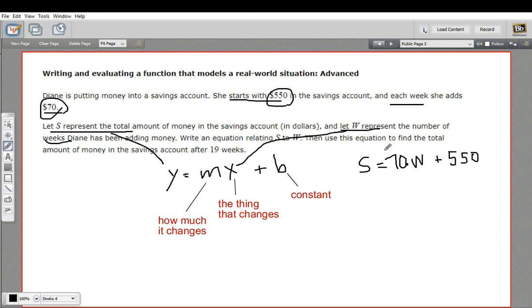Now, the second part is to use that equation to find the total amount of money in the savings account after 19 weeks. So we just put in 19 for w, which represents the number of weeks. So we get 70 times 19 plus 550. And we just do the math there and we'll find out.